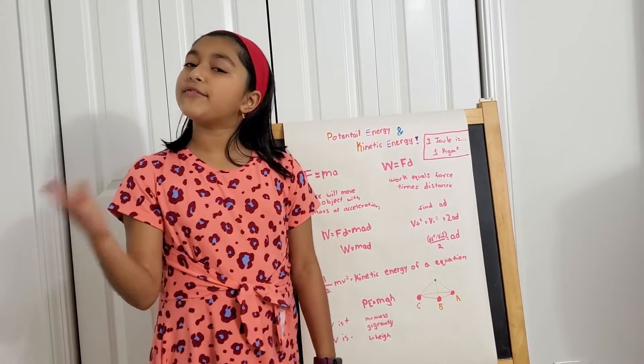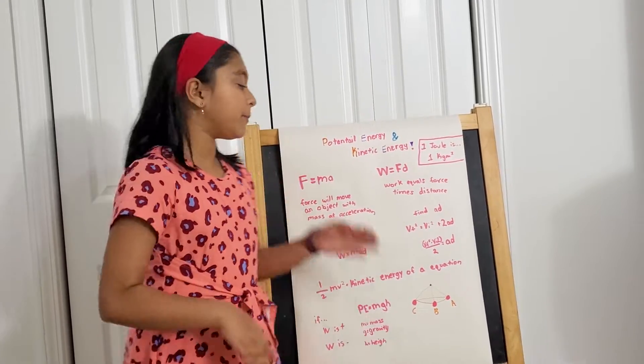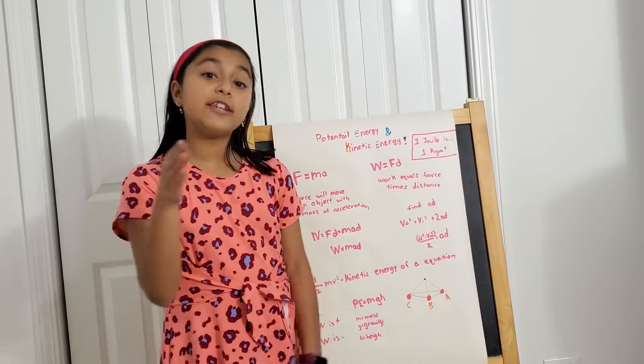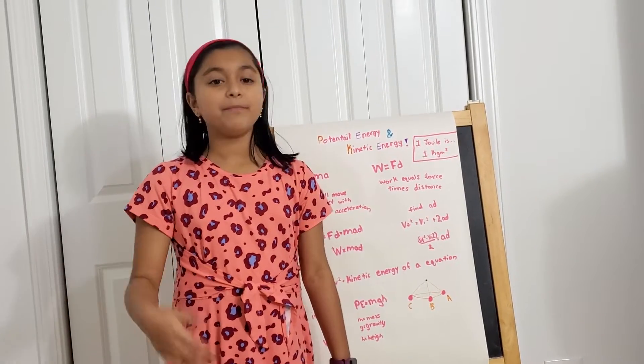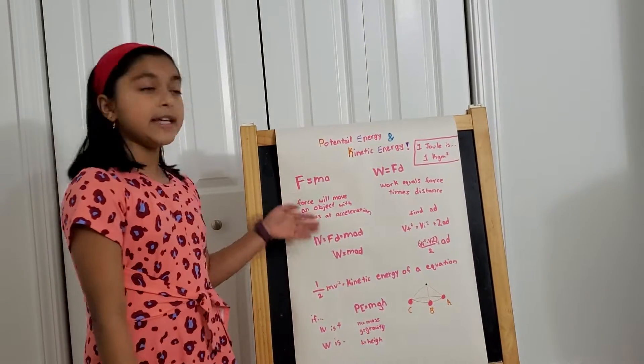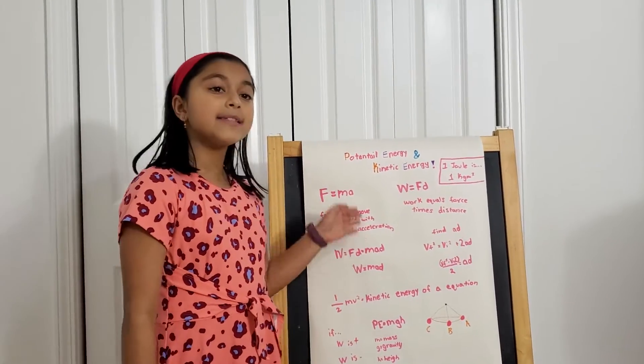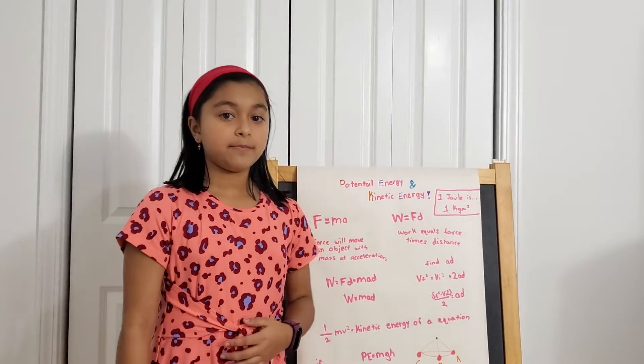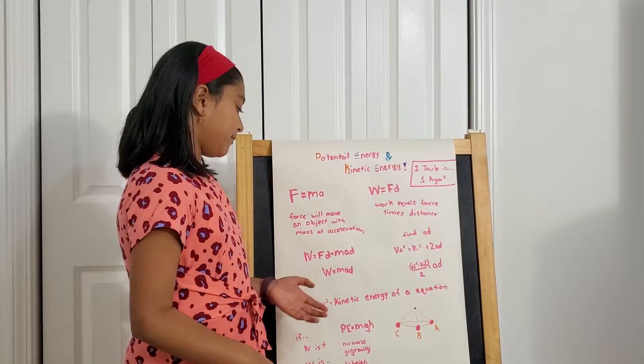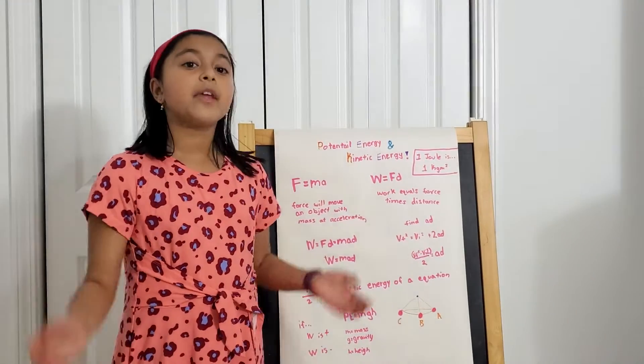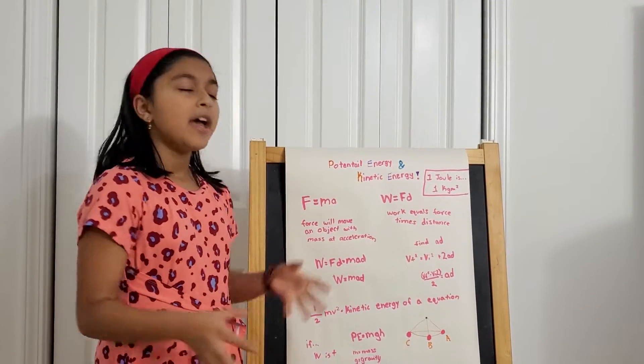And now because of that, we must add MA with the distance, the mass acceleration times its distance. So work is equal to force times distance and mass acceleration times its distance. Since there is force with all of it, we can just say that W equals mass acceleration times its distance.